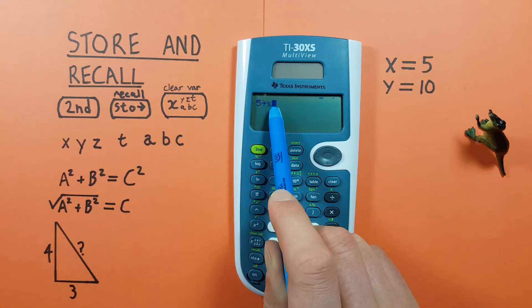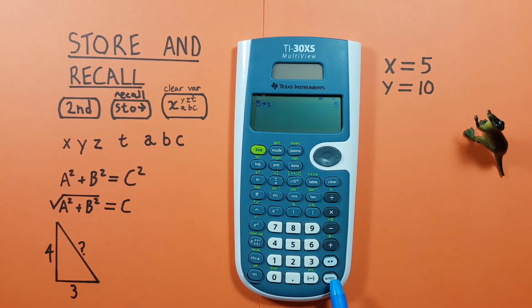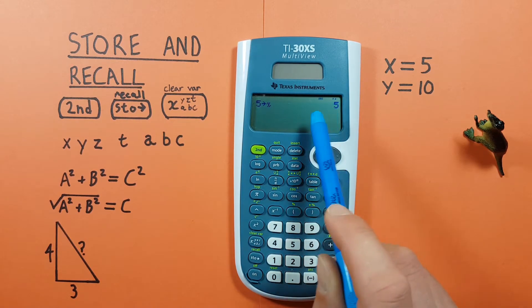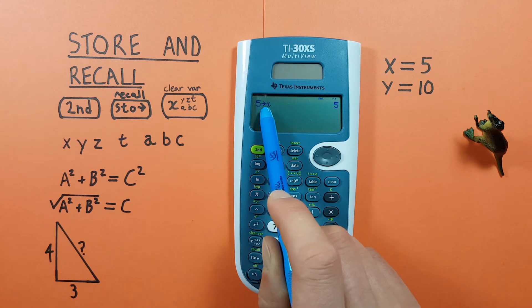There we go, we want to put 5 into X, and we press enter. We see 5 on the opposite side of the screen, and our 5 has now been stored into the X memory slot.